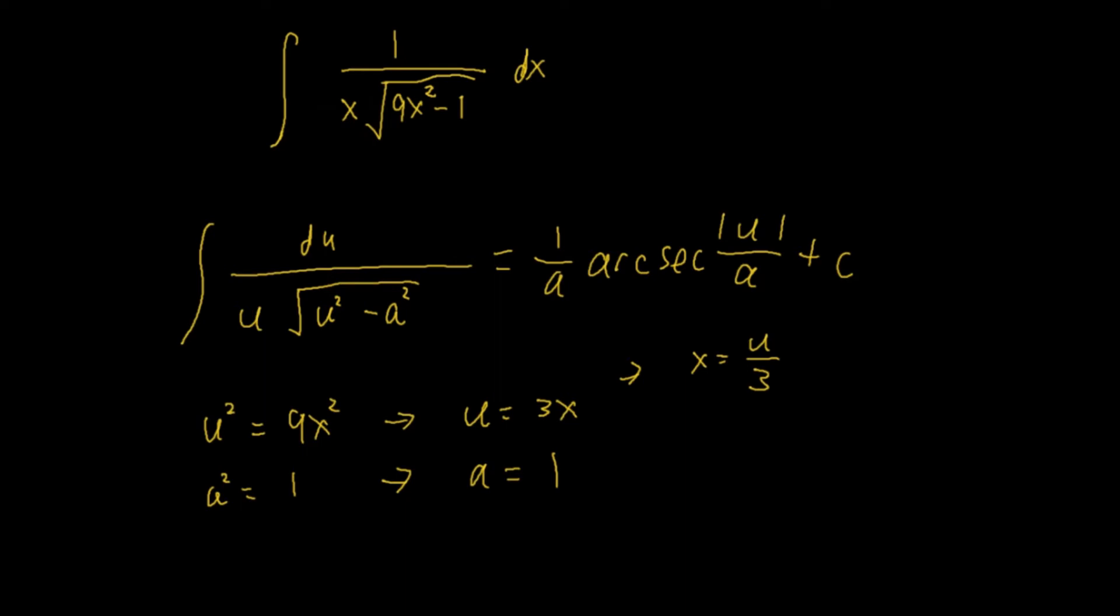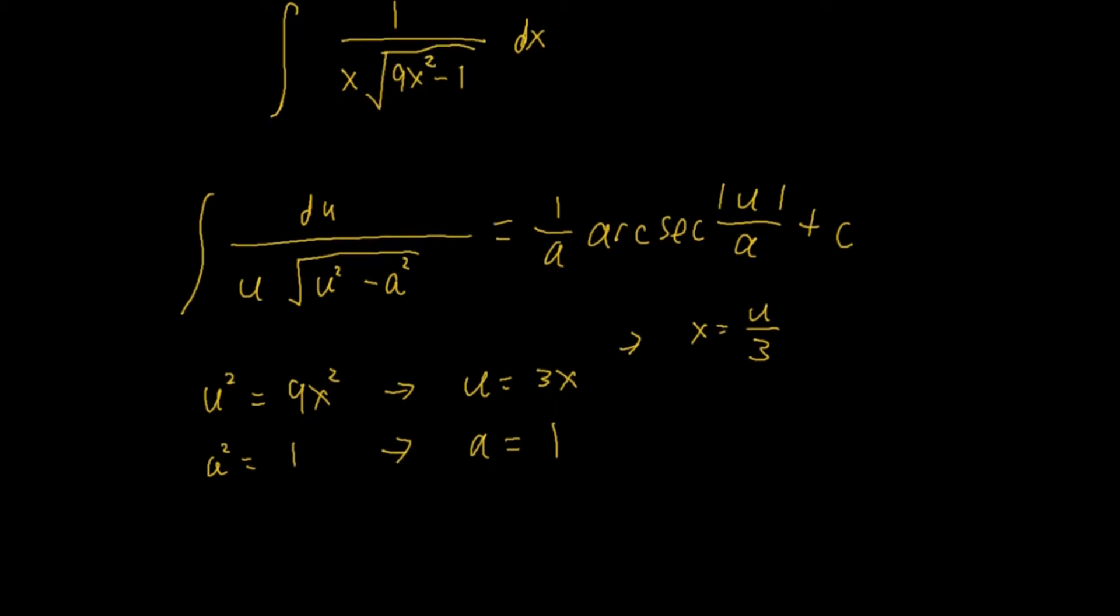Now, since we are setting it as u, we need to find du here. We don't have du here yet. So, what is du? We have to look at u, which is here. u equals to 3x. And, what we have to do is take the derivative of u with respect to x. So, du dx equal to 3. We have to isolate dx. So, dx is actually du over 3.